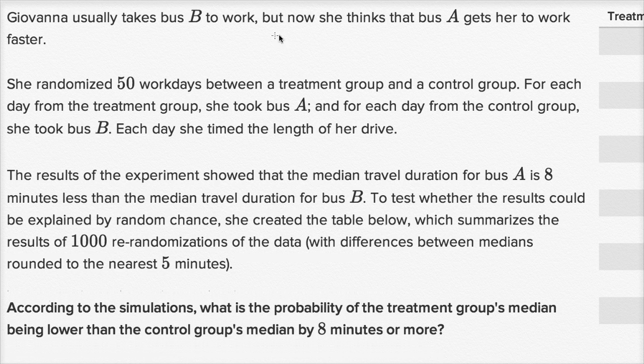Giovanna usually takes bus B to work, but now she thinks that bus A gets her to work faster. She randomized 50 workdays between a treatment group and a control group. For each day from the treatment group, she took bus A, and for each day from the control group, she took bus B. Each day, she timed the length of her drive.